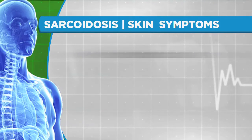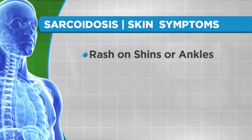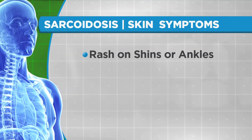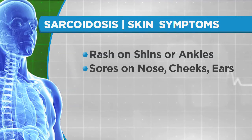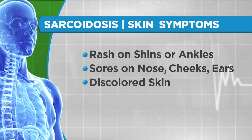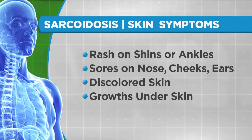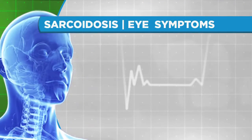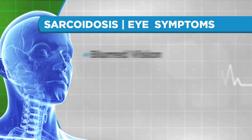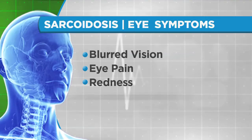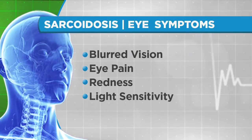When the skin is affected, people may have a rash of red or reddish-purple bumps, which are usually located on the shins or ankles. They may also have sores on the nose, cheeks, and ears, and areas of skin that are darker or lighter in color. Finally, there can be growths under the skin. Eye symptoms can include blurred vision, eye pain, severe redness, and sensitivity to light.